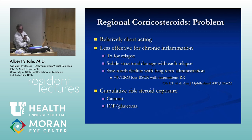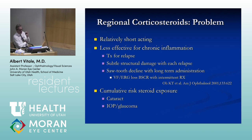Regional corticosteroids are relatively short-acting and less effective for chronic inflammation, so you'd have to keep repeating injections. With each relapse or in chronic disease, there's a sawtooth decline in retinal function. An approach of injecting a patient every two months is probably not viable for chronic therapy — those patients might need systemic therapy. There's also the cumulative risk of cataract, glaucoma, and endophthalmitis with each injection.